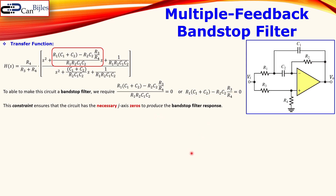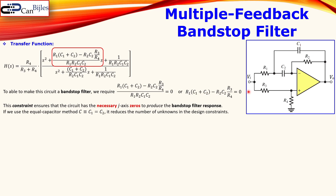This constraint ensures that the circuit has the necessary imaginary zeros which produce the band stop filter behavior. We can create this condition more easily by setting the two capacitors equal to each other — C1 = C2, defined as capital C. With equal capacitors, the constraint can be written as: 2·C·R1 on one side equals C on the other.